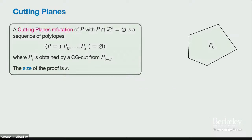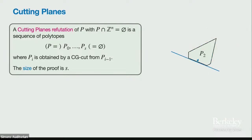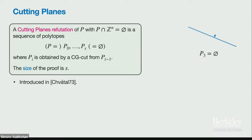This approach dates back to Lovász, who started doing this with the cutting planes proof system. A cutting planes refutation of a polytope with no integer points is a sequence of polytopes where each is obtained from the previous by adding a CG cut. The size of the proof is the number of polytopes in the sequence. We add cuts one at a time until the polytope becomes empty.